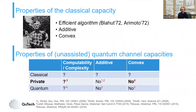The third property is complexity — ideally we would have an efficient way of computing capacity. The classical capacity of a noisy classical channel is additive, convex, and can be computed efficiently. In the quantum case the situation is much more complicated. First, the usefulness depends on the task — there is the private capacity for key distribution and the quantum capacity for transmitting quantum information. We know that private and quantum capacities are neither additive nor convex, and regarding complexity, we do not even know whether these capacities are computable, with partial evidence suggesting uncomputability.